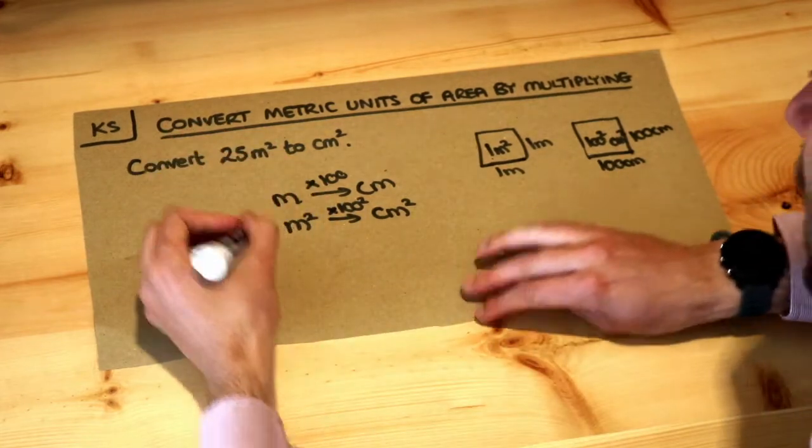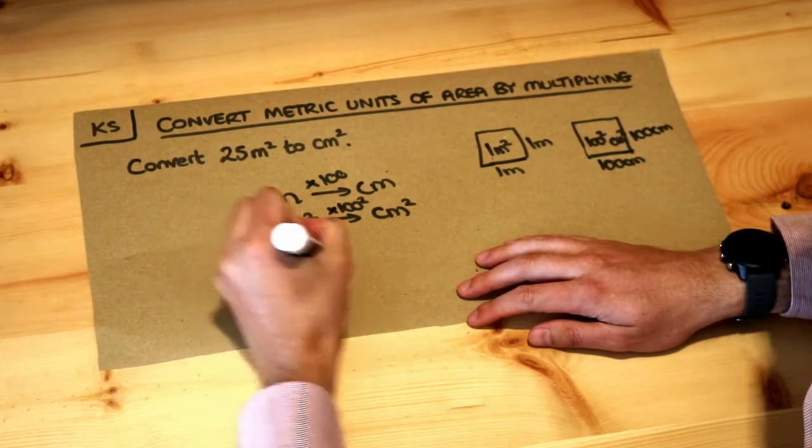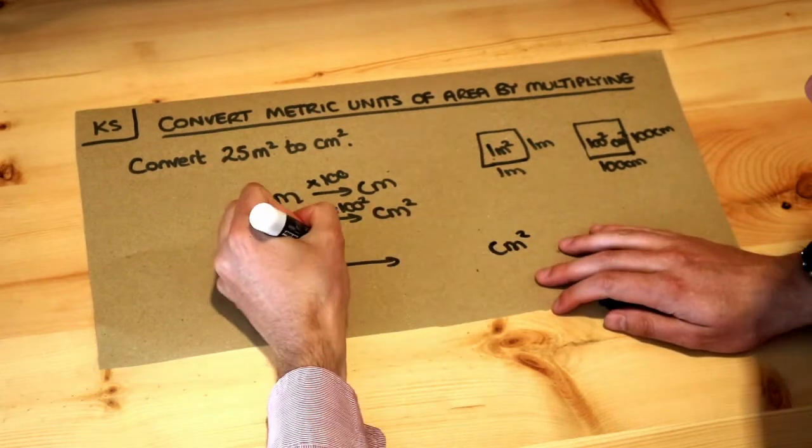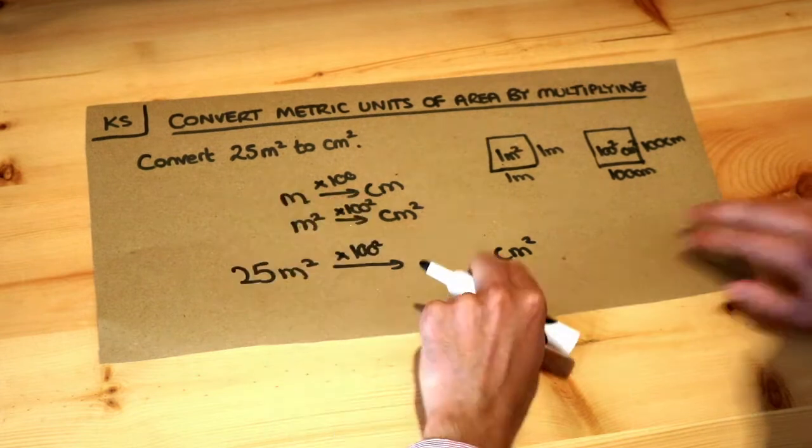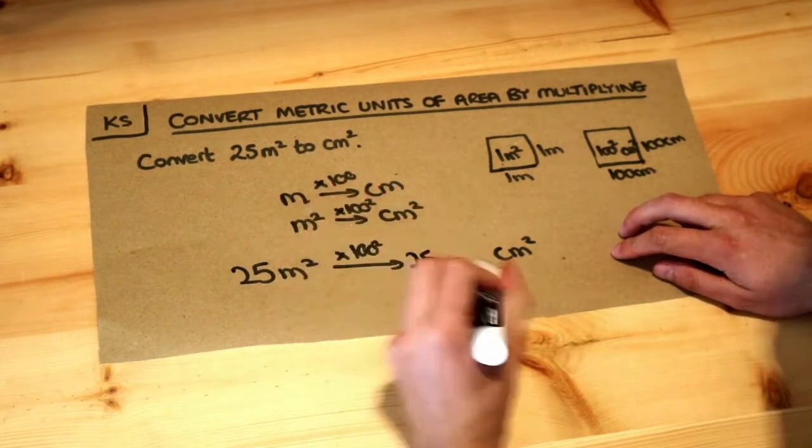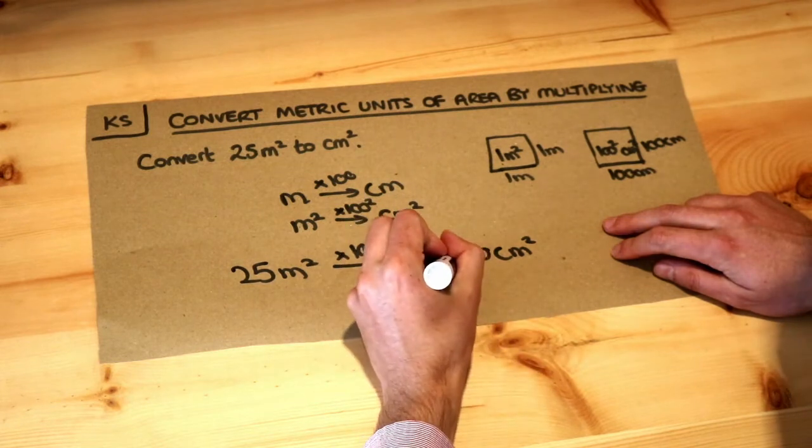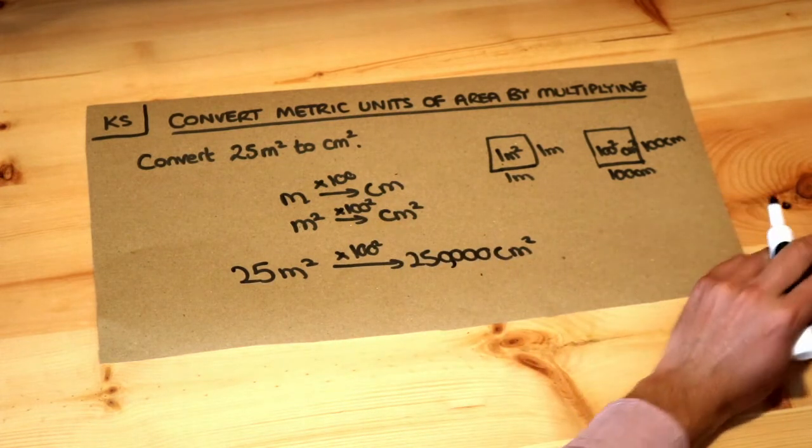So using that, we have 25 metres squared we want to convert to centimetres squared. We just times by 100 squared, and 25 times 100 and times 100 again will give you four zeros. So that will be the answer: 250,000 centimetres squared.